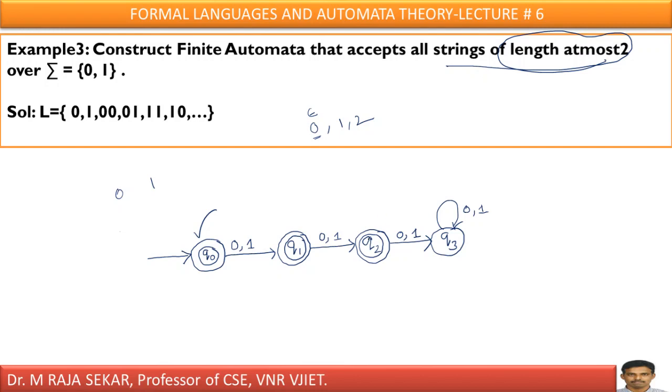0 0 also, 2 length strings. 1 1 is also 2 length strings. If I keep third 1 or third 0, I will go to q3 state. I can say this is a trap state. After the trap state, if we keep any number of 0s and 1s, that transition stays in the trap state itself.